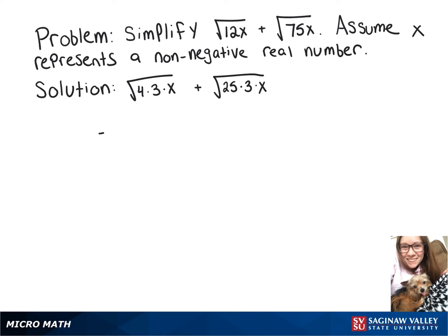Now underneath our first radical, the square root of 4 is 2, so we can pull that out, and then we're left with the square root of 3x.